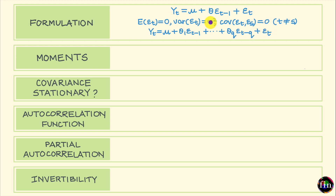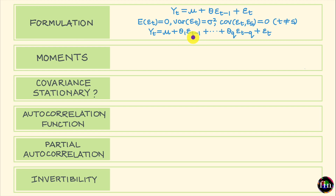I can take the specification for MA1 and extend this model by not only working with a single lagged value of the shock but working with many more lagged values. This gives me the higher order MA model, also called the MAQ model, where we work with Q lagged values of the shock. The specification reads as: Yt equals the constant mu plus theta 1 times the shock one period ago, plus theta 2 times the shock two periods ago, all the way to theta Q times the shock Q periods ago, plus the shock for the current period, epsilon T.